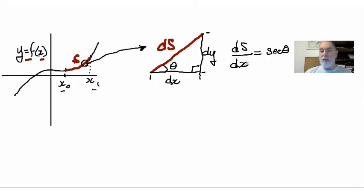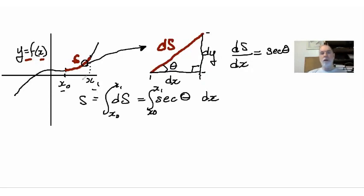Now let's bring this dx over to the right, so we end up with ds equals secant of theta times dx. And what we'll do is take the integral of both sides between x naught and x sub 1, and that will give us s, which is what we're looking for, the length of the full curve between these two x's.